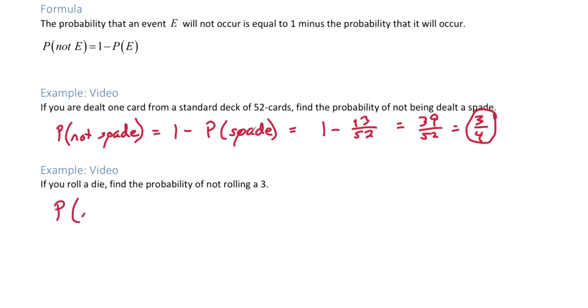The probability of not rolling a 3 is 1 minus the probability that you do roll a 3. We have 1 minus the probability of rolling a 3. There's one 3 out of 6 total outcomes, leaving us with 5 sixths.